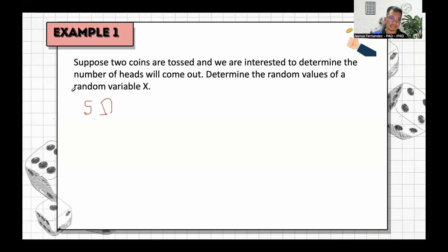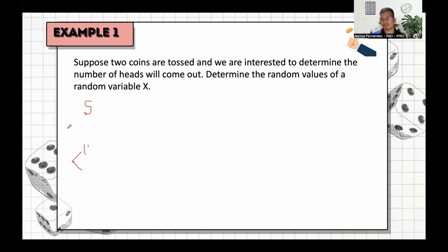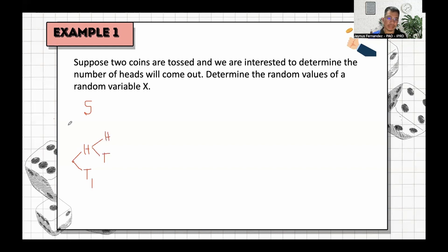We know that the sample space is the set of all outcomes in an experiment. If you toss a coin, the possible outcome is either head or tail. Let's draw a tree diagram to see this clearly. We have head and tail. Remember that the problem says tossing two coins, so we toss again and the possible outcome would either be head or tail. We put head and tail for each branch.